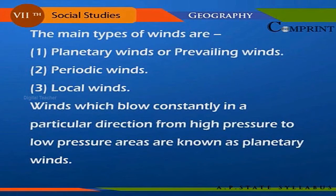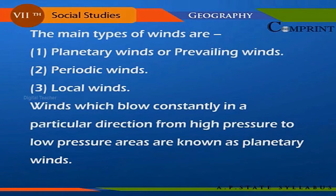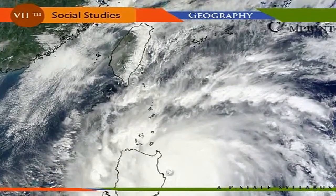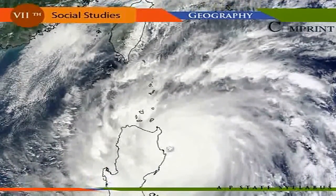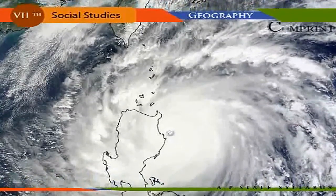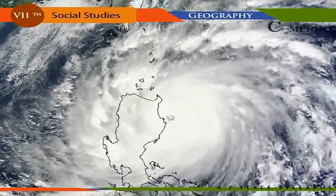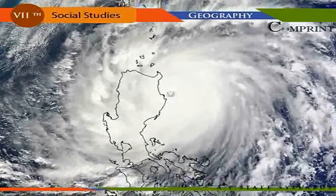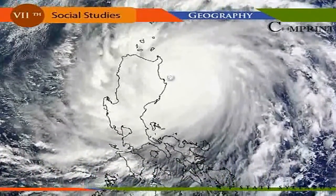The main types of winds are: planetary winds, which are prevailing winds; periodic winds; and local winds. Winds which blow constantly in a particular direction from high pressure to low pressure areas are known as planetary winds. Monsoon winds occur mostly in the tropical region.